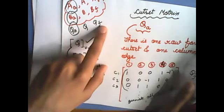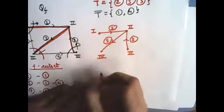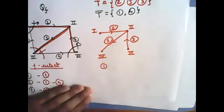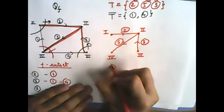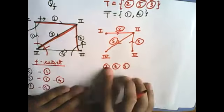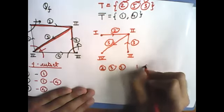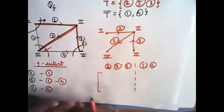Ab humein banane dijiye - 2, 3, 5, 2, 3, 5, 1, 4. Maine ise alag karke kyun likha hai? Aap abhi samajh jayenge, because I want this to form an identity matrix-like structure. C1, C2, C3 ko define kar raha hoon.